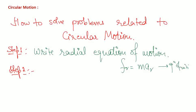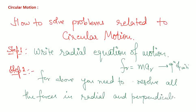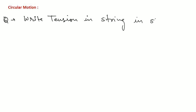For this, you need to resolve all the forces in the radial direction and the perpendicular direction to it. Once the forces are resolved, you can write the radial equation of motion and solve for the unknown. Let's apply this to the next problem: find the tension in the string for a simple pendulum and a conical pendulum.